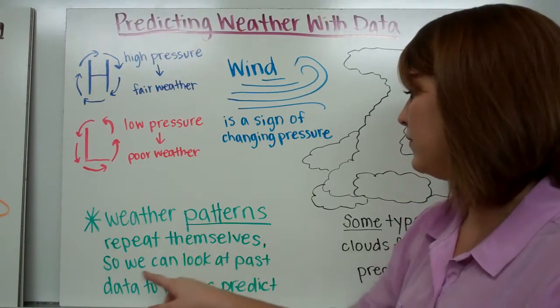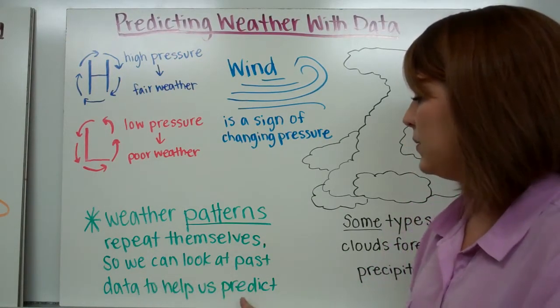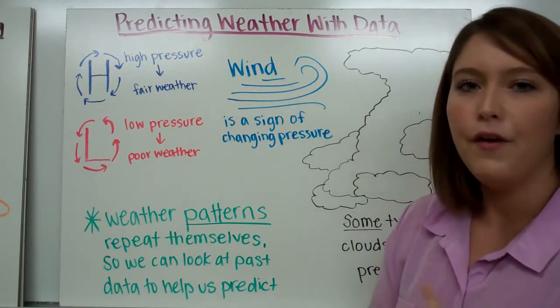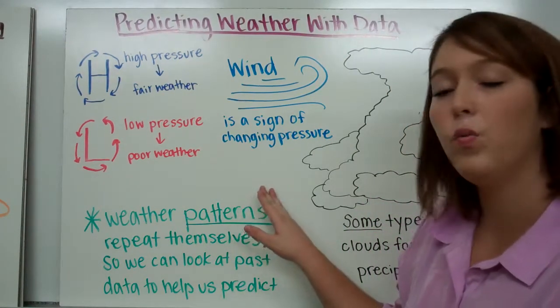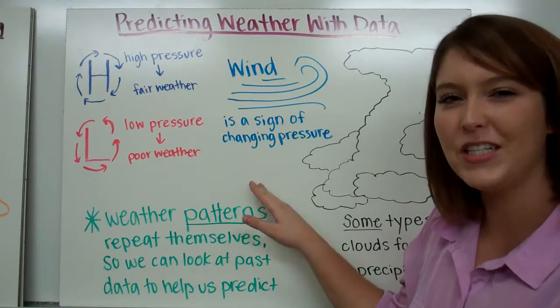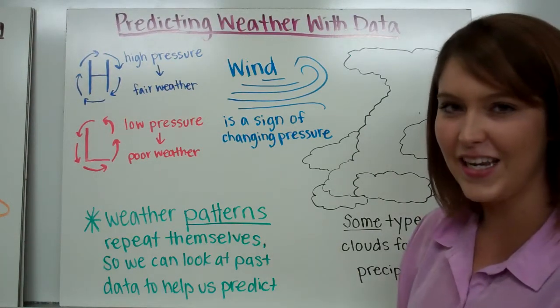Weather patterns repeat themselves, so we can look at past data to help us predict. We can look at data from yesterday, from a year ago, or from a decade ago, and we can compare those with patterns that we're seeing today to help us predict what kind of weather we might experience in the near future.